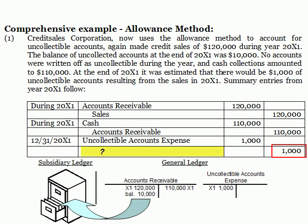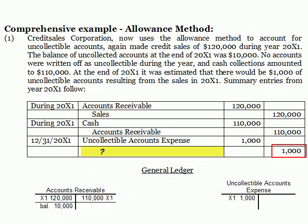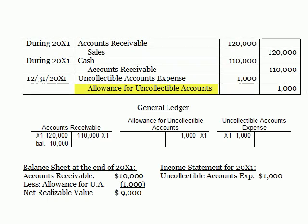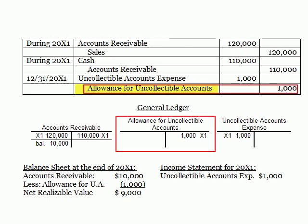Think of this subsidiary ledger as a filing cabinet full of customer files. Whenever a customer buys something on account or pays an account balance, we debit or credit accounts receivable in the general ledger, and then record the sale or the collection in the customer's file. Accounts receivable in the general ledger is the controlling account over the files in the filing cabinet. That means whenever we record anything in accounts receivable in the general ledger, we also record it in the customer's files. Because of this subsidiary ledger, we will not be able to credit accounts receivable in our December 31st entry — if we do, we'd have to record this in a customer's file, and since none of the accounts are even overdue right now, we wouldn't know whose account to credit. Therefore, we'll record the credit in another account that is linked to accounts receivable.